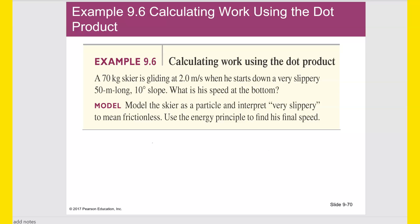Okay, calculating the work done using a dot product. All right, 70 kilogram skier is gliding at two meters per second when he starts down a very slippery 50 meter long 10 degree slope. What is his speed at the bottom? Okay. So, if we draw a picture of that, we might draw it like this. There's 10 degrees. Here's this object.